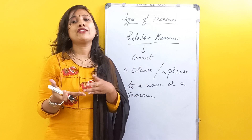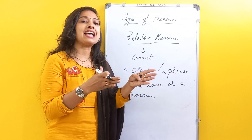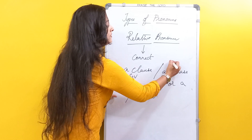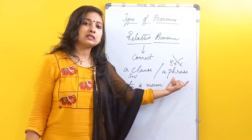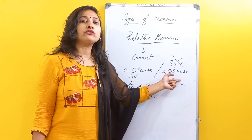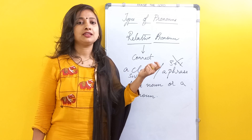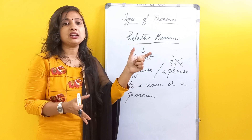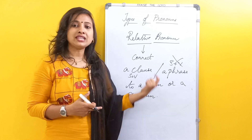What is a clause and what is a phrase? A clause is something which has got both a subject and a verb. A phrase doesn't have a subject and a verb — it is simply a combination of words. So together they form a sentence. The relative pronoun connects the clause or phrase to the noun or the pronoun — that is what is important here.